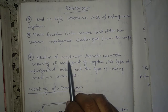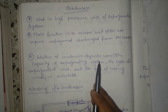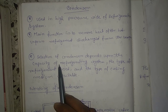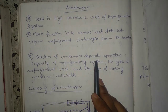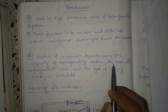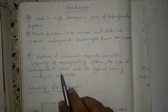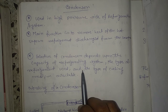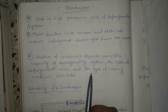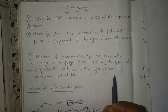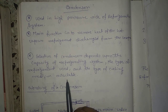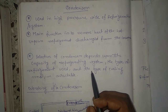The second topic is the selection of a condenser. Selection depends on several factors. First, it depends on the capacity of the refrigerating system. Second, the type of refrigerant used — it may be R11, R12, or R134a. Third, the type of cooling medium — which may be air-cooled or water-cooled — determines which condenser you select for a particular purpose.